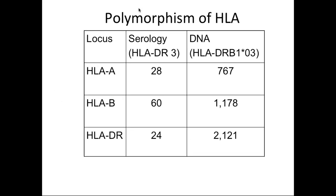Let's talk about the polymorphism of HLA. In the old days, they used serology — something would be labeled as HLA-DR3, for example. For HLA-A there were 28 different serological types, for B about 60, for DR about 24. Now we have DNA-based HLA typing, which is what the star denotes in the name — like DRB1*. HLA-A now has more than 700 alleles, B more than 1000, DR more than 2000 different HLA alleles, and this is increasing every day as more genotypings are done.